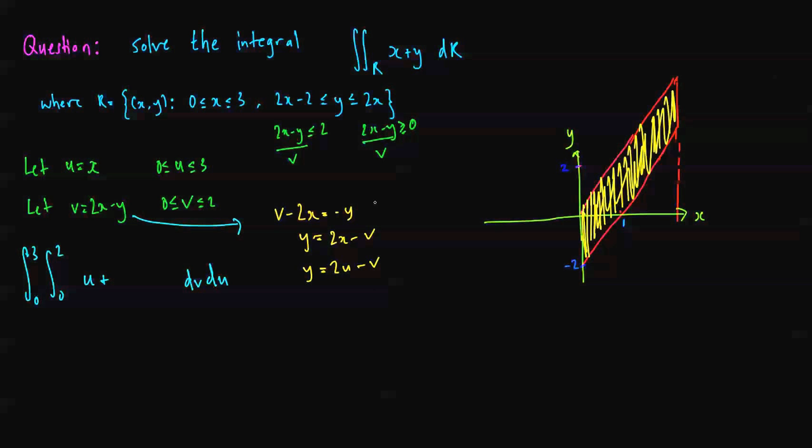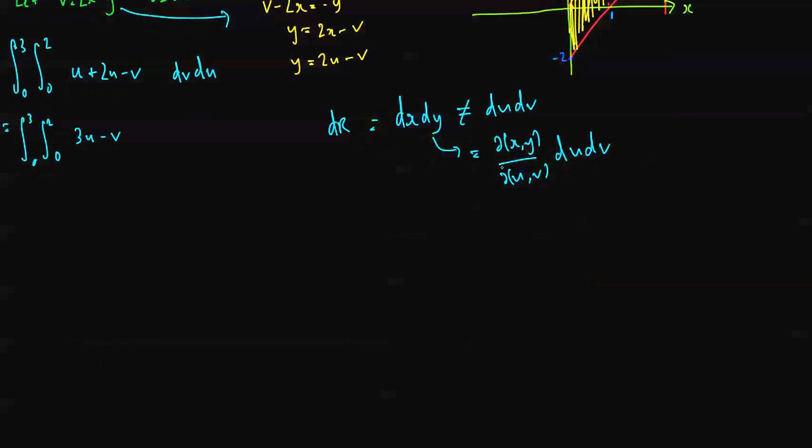I'll sub that in, so plus 2u minus v. So that's equal to 3 to 0, 0 to 2, 3u minus v, except dv du at the moment. We have dR equal to dx dy, but dx dy does not equal du dv, it equals the Jacobian times du dv. So this partial derivative is what we call the Jacobian.